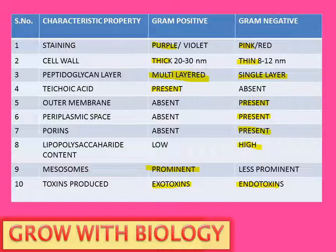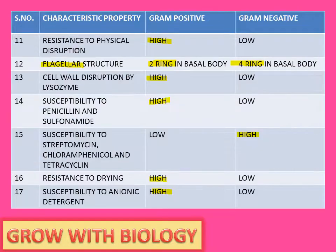Prominent mesosomes are found in gram positive. Exotoxins are produced by gram positive bacteria, whereas endotoxins are produced by gram negative bacteria. Resistance to physical disruption is high in gram positive while low in gram negative.